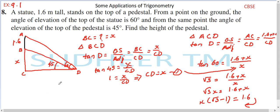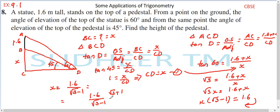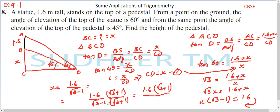So x equals 1.6 divided by (root 3 minus 1). We rationalize by multiplying numerator and denominator by the conjugate, root 3 plus 1. The denominator becomes (root 3 minus 1)(root 3 plus 1), which is in the form (a minus b)(a plus b) equals a squared minus b squared. With a equals root 3 and b equals 1, this gives 3 minus 1 equals 2. So x equals 1.6 times (root 3 plus 1) divided by 2.